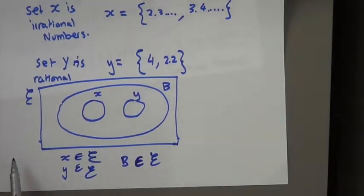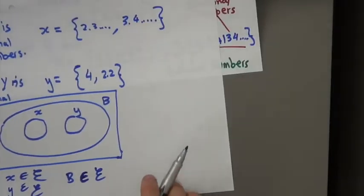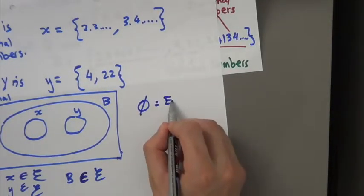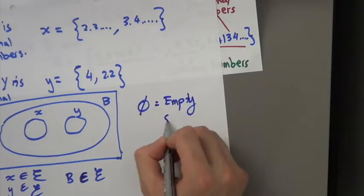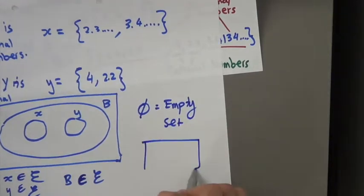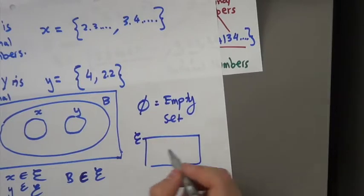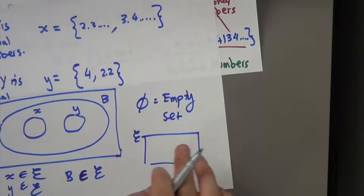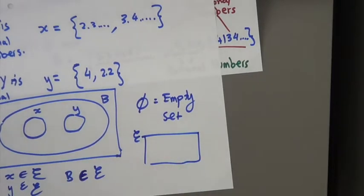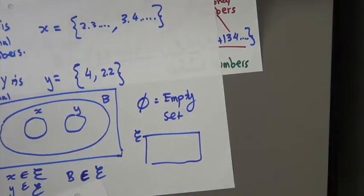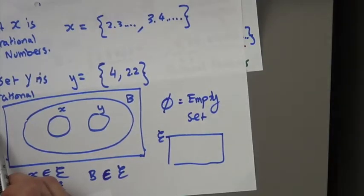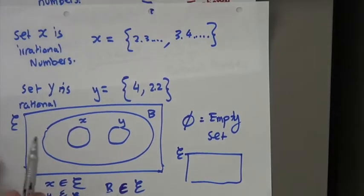Now, there's also this notation here, which is, this means an empty set. So that means, let's say this is E and there's nothing in it. So that means it's an empty set. There's no numbers or objects or letters or anything like that. So this symbol stands for, remember, empty set and E, universal set.